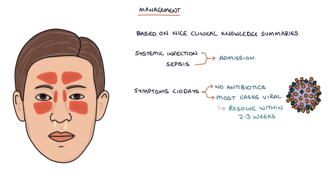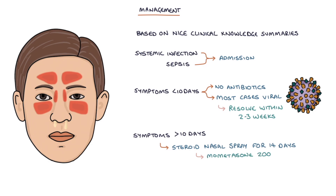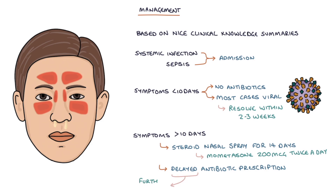For patients with symptoms not improving after 10 days, NICE recommend the options of a high-dose steroid nasal spray used for 14 days — for example mometasone 200mcg twice a day — or a delayed antibiotic prescription, which can be used if symptoms are worsening or don't improve within a further 7 days. Phenoxymethylpenicillin, or penicillin V, is first line.